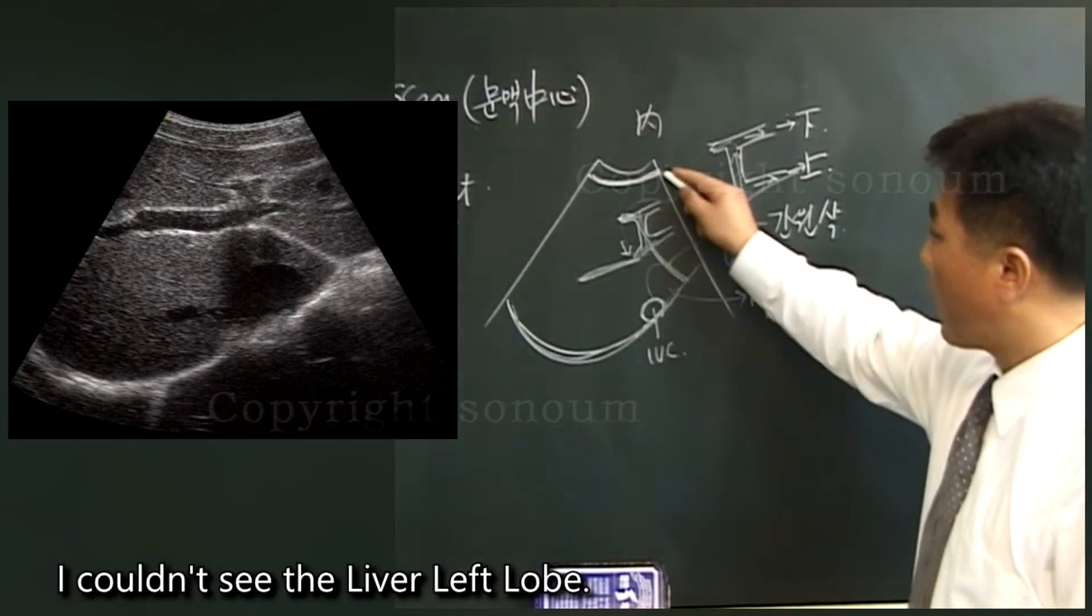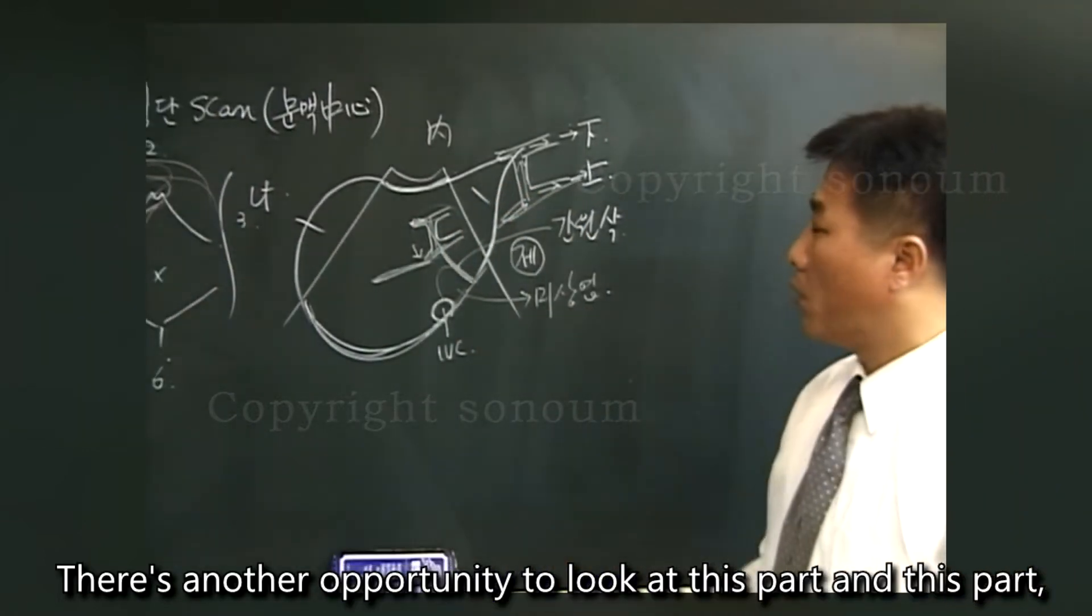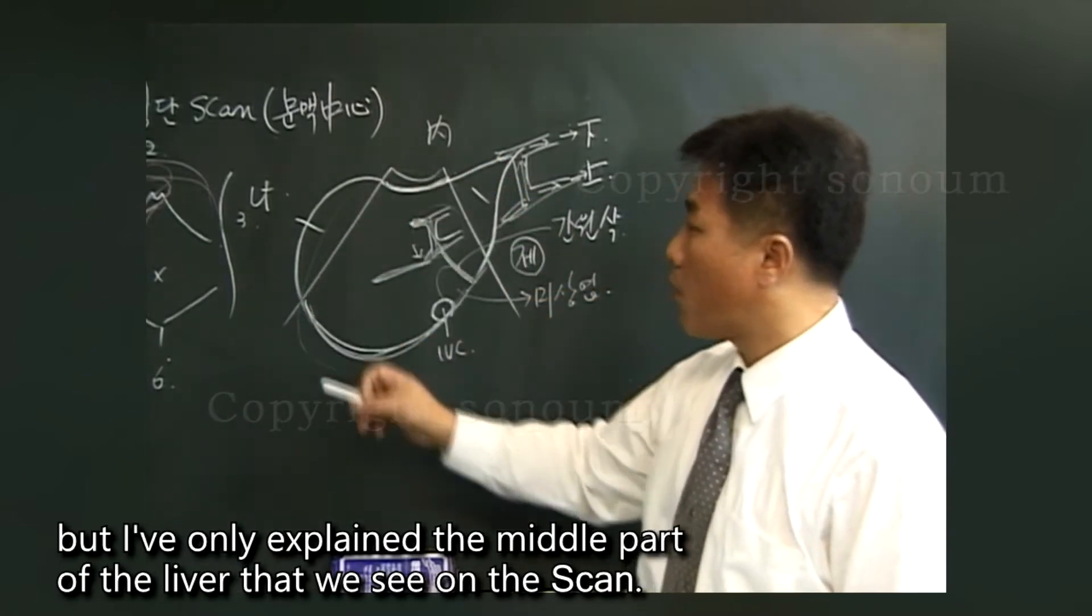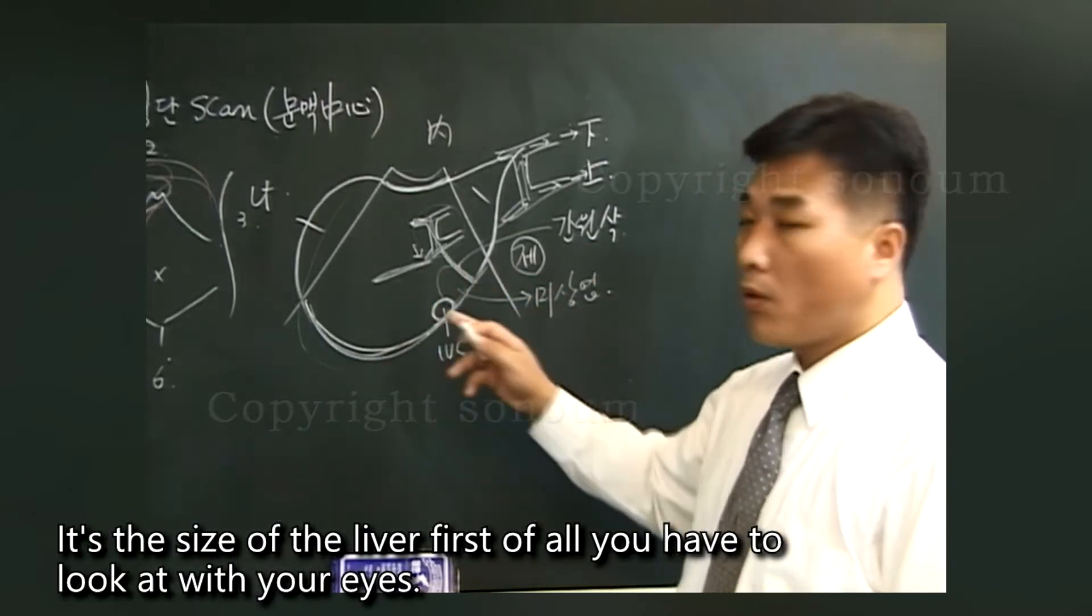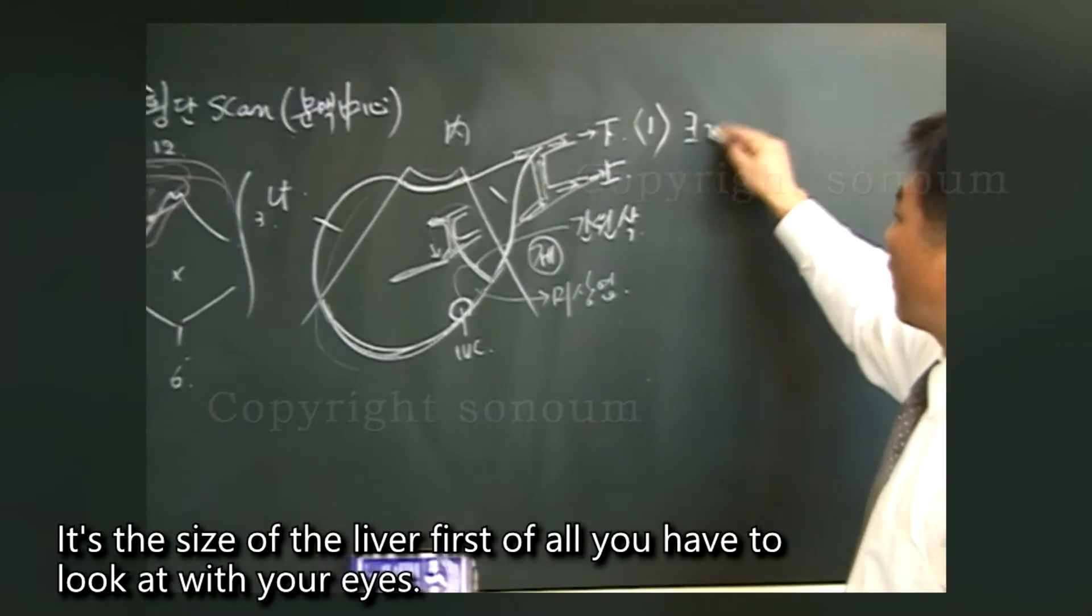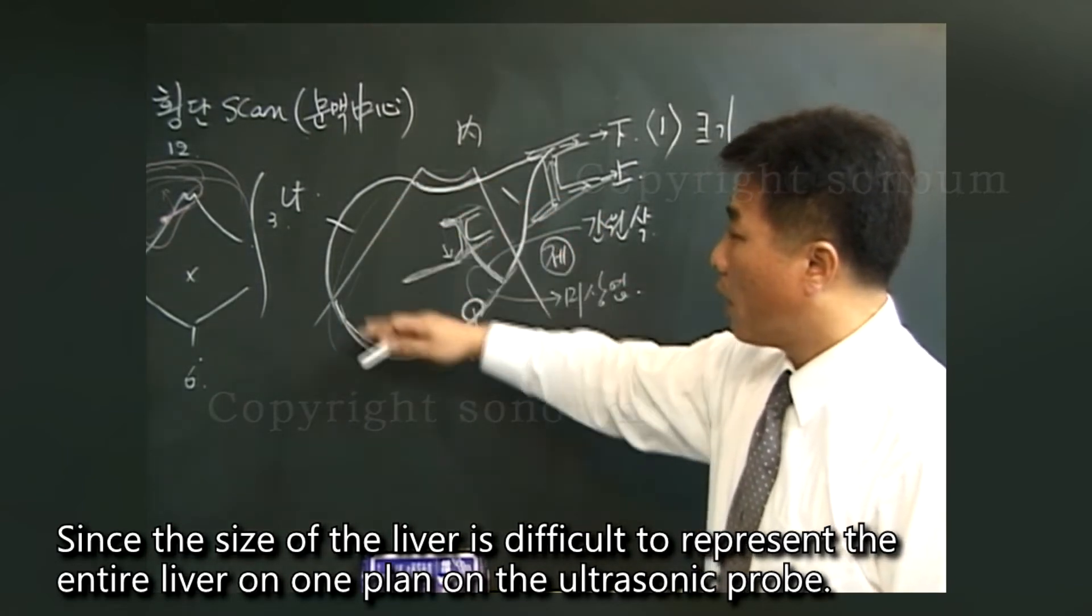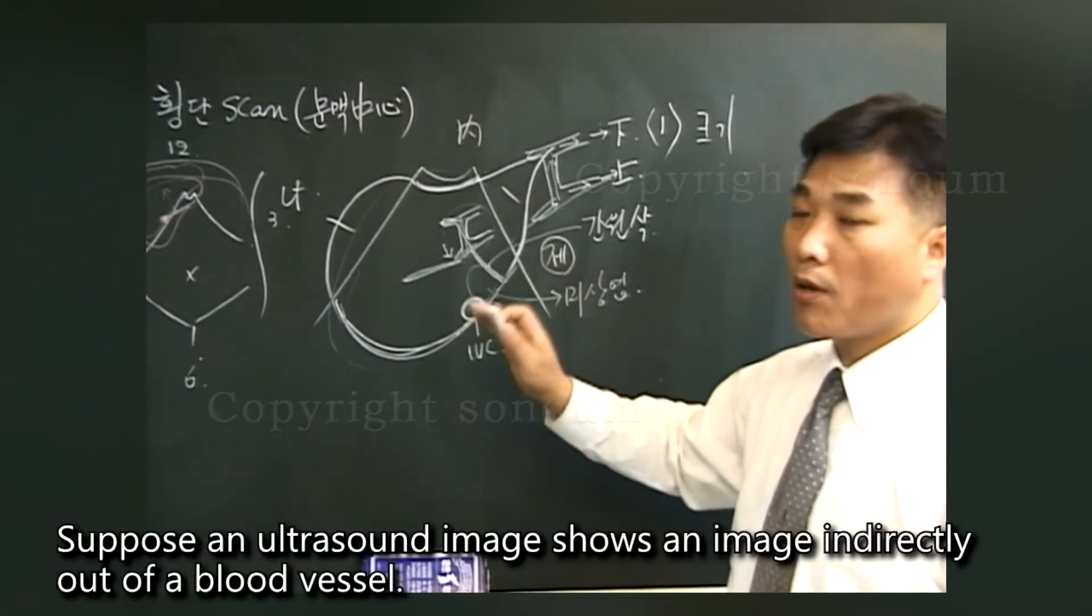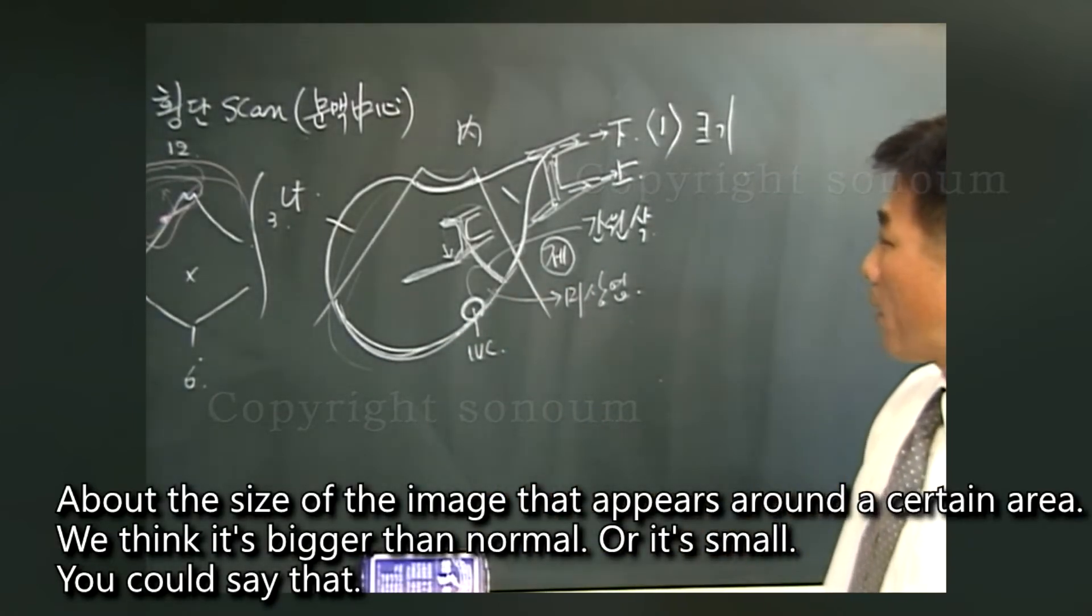Where can you see it from here? I couldn't see the liver left lobe. I couldn't see the right lobe of the liver. There's another opportunity to look at these parts. But I've only explained the middle part of the liver that we see on the surface. It's the size of the liver first of all you have to look at with your eyes. Since the size of the liver is difficult to represent on one plane on the ultrasonic probe, suppose an ultrasound image shows an image indirectly out of a blood vessel.